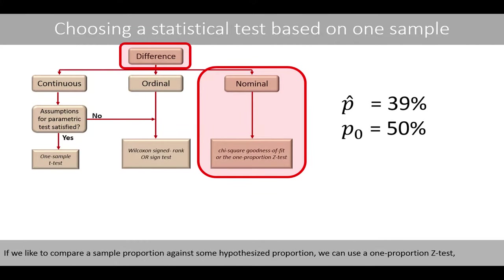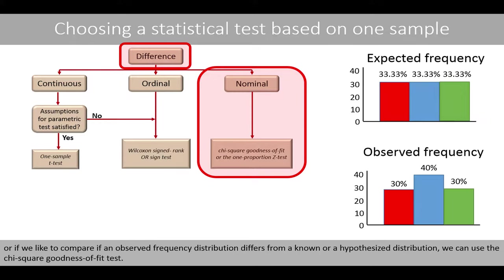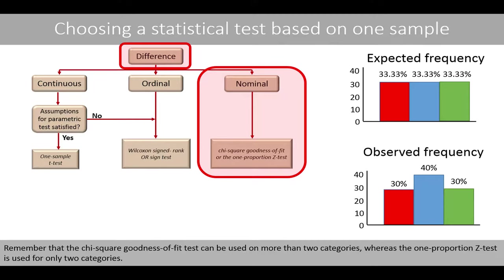If we'd like to compare a sample proportion against some hypothesized proportion, we can use a one-proportion z-test. Or if we'd like to compare if an observed frequency distribution differs from a known or hypothesized distribution, we can use the chi-square goodness-of-fit test. Note that the chi-square goodness-of-fit test can be used on more than two categories, whereas the one-proportion z-test is used for only two categories.